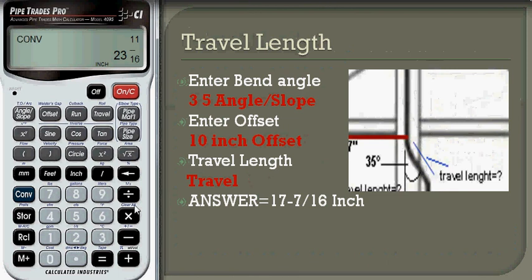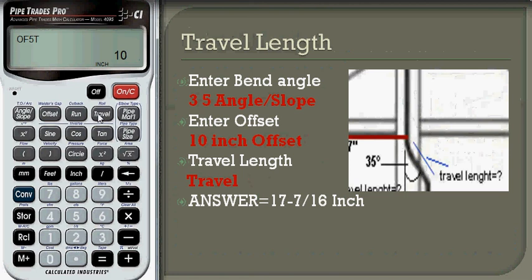For the travel length for the offset having a 35-degree bend angle: clear first, then enter 35 and press angle or slope to store the value. Enter 10, press inch, and press offset to store the value. Press travel to find the travel length. The answer is 17 and 7/16 inches for the 35-degree offset.